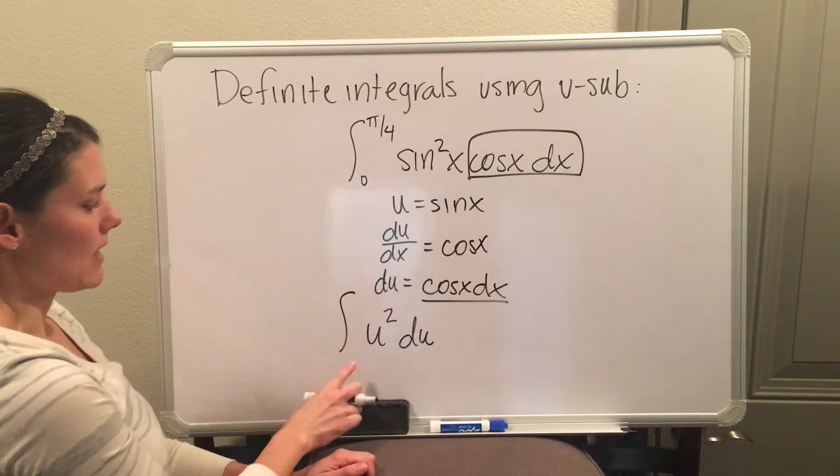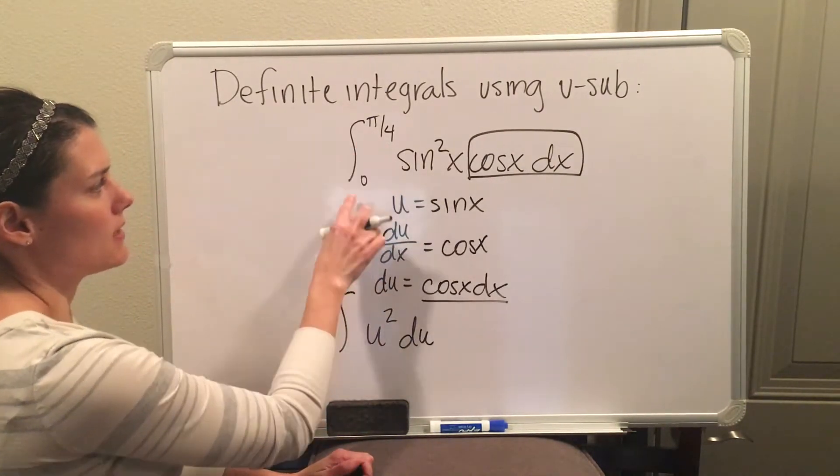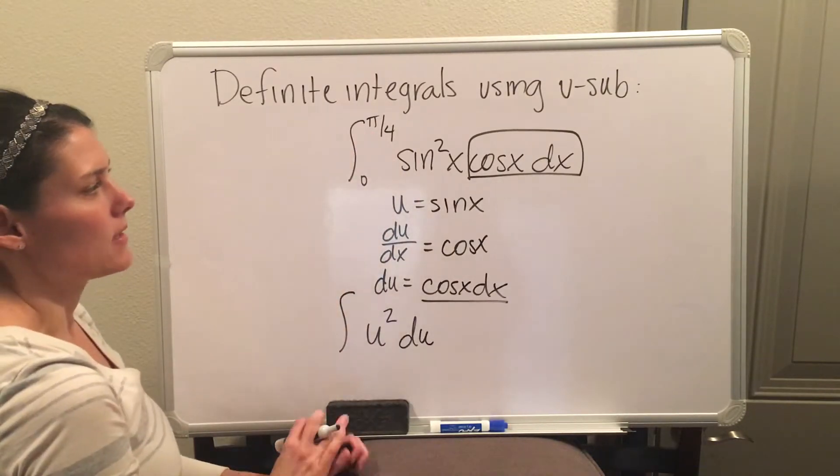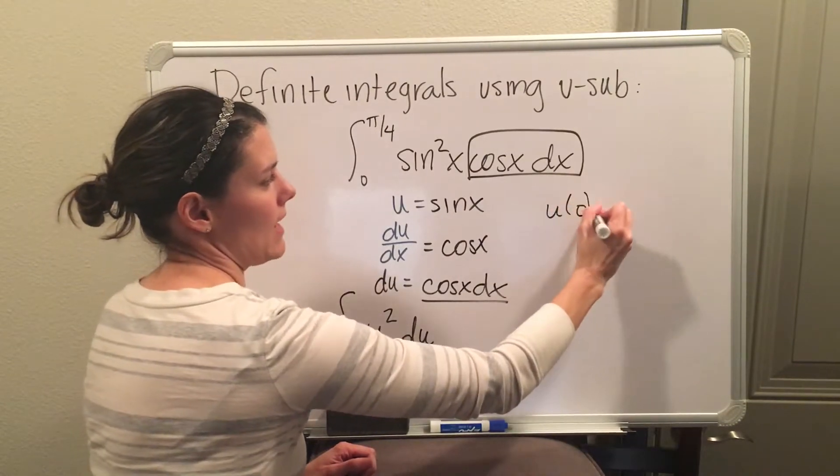Now do not forget, again, do not put 0 to pi over 4 because that is not correct. You need to replace 0 to pi over 4 as u's as well. So again, you take your u equation, and you plug in the a.